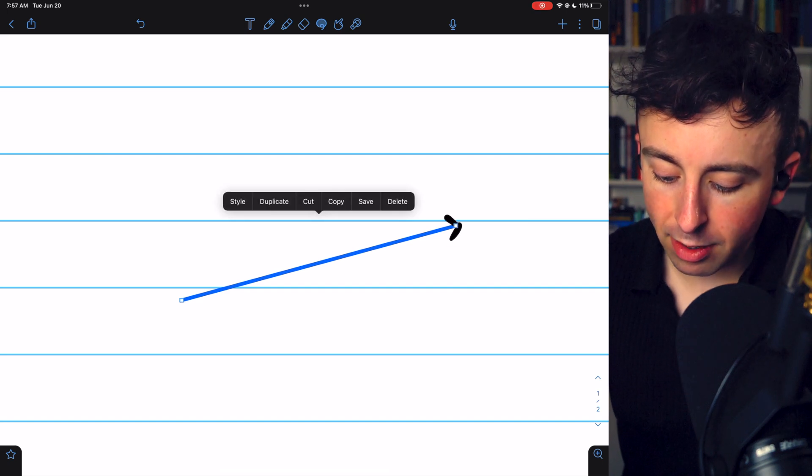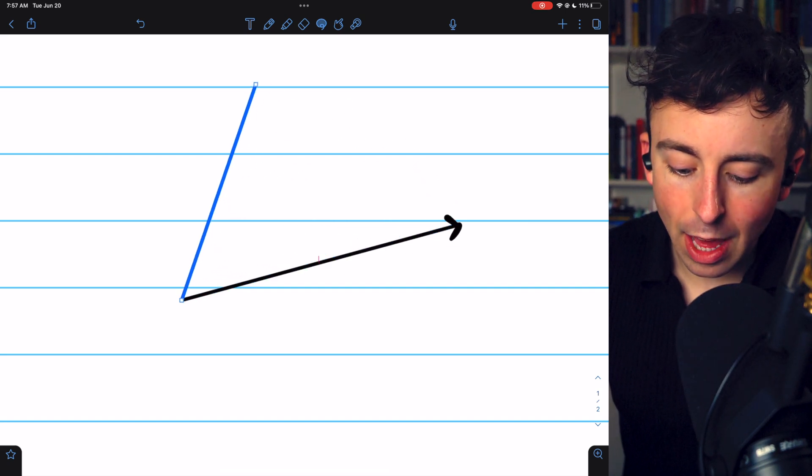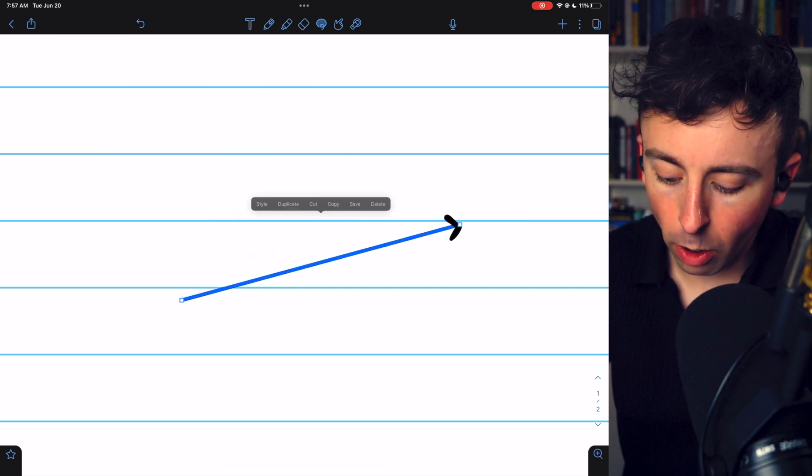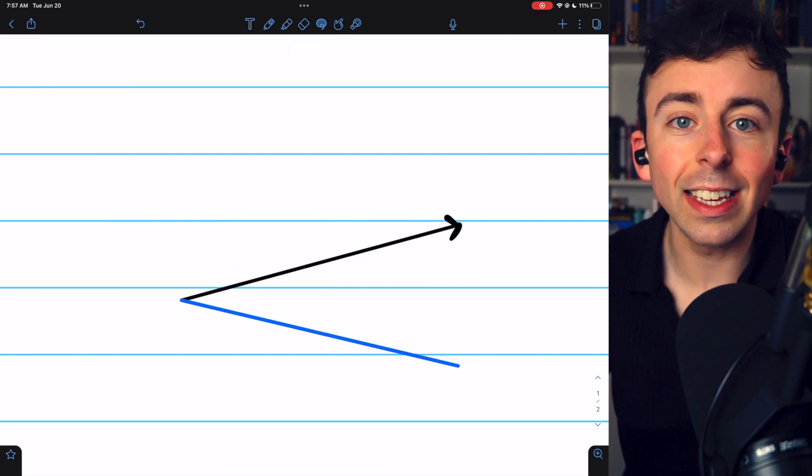One ray remains fixed, while the other rotates either counterclockwise or clockwise to create the angle.